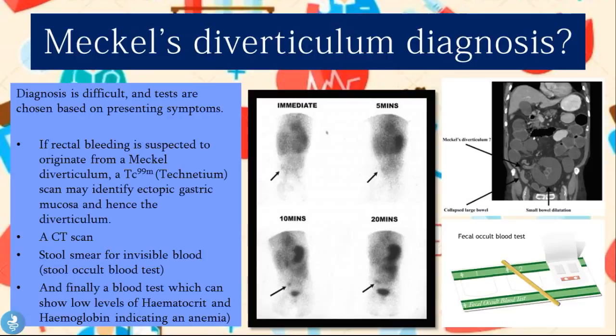Diagnosis of Meckel's Diverticulum is difficult and tests are chosen based on presenting symptoms. If rectal bleeding is suspected to originate from a Meckel's diverticulum, a technetium scan can identify the ectopic gastric mucosa and hence the diverticulum. A small amount of technetium, a radioactive substance, is injected intravenously into the bloodstream and tends to collect in the area of the diverticulum. On the scan images — at immediate injection, 5 minutes, 10 minutes, and 20 minutes — you can see an abnormal spot developing, which is the diverticulum.